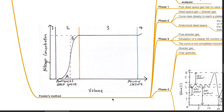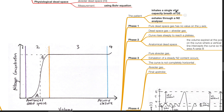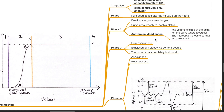In Fowler's method, the patient inhales a single vital capacity breath of oxygen and exhales through a nitrogen analyzer. The y-axis represents nitrogen concentration and the x-axis represents exhaled volume of gas. Phase 1 is pure dead space gas and has no nitrogen value on the y-axis. Phase 2 represents dead space gas plus alveolar gas, and the curve rises steeply to reach a plateau. Anatomical dead space is the volume expired at the point where a vertical line intercepts the curve such that area A equals area B. Phase 3 represents pure alveolar gas, during which exhalation of a steady nitrogen content occurs.